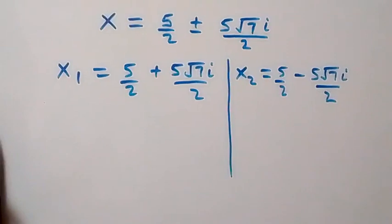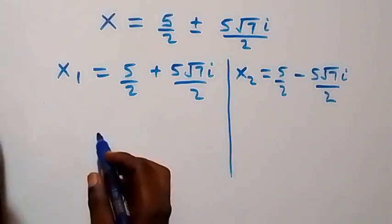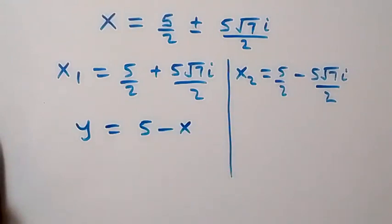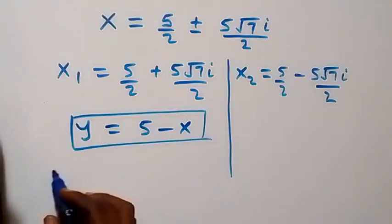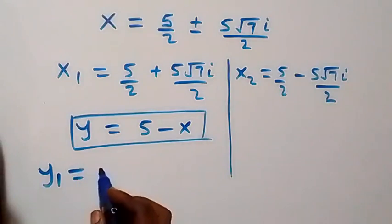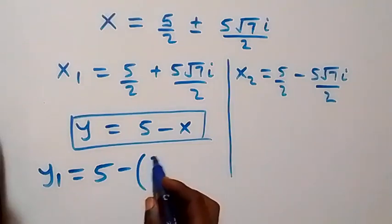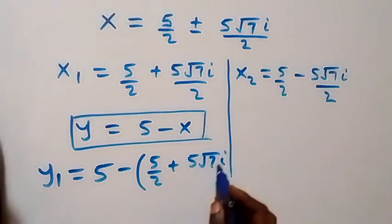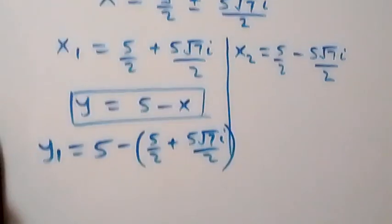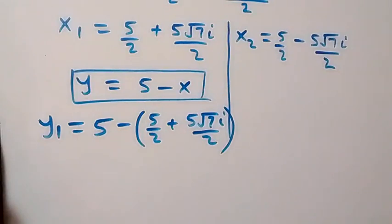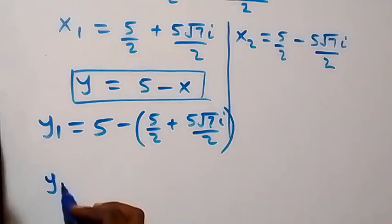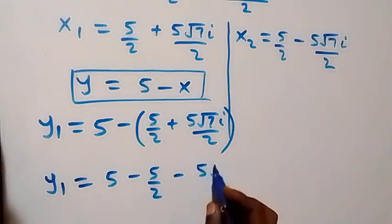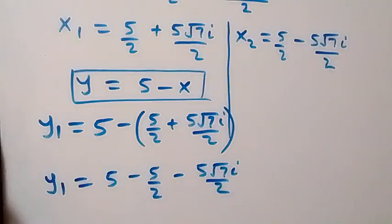We can find the corresponding values of y from equation three: y equals five minus x. So y₁ equals five minus x₁, which is five minus (five over two plus five root seven i over two). Opening the bracket gives y₁ equals five minus five over two minus five root seven i over two.